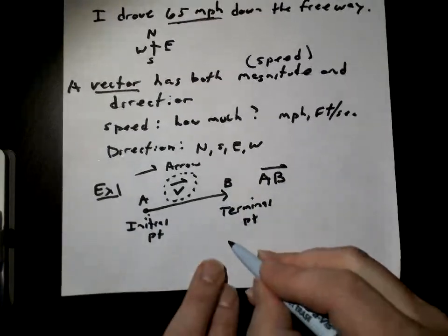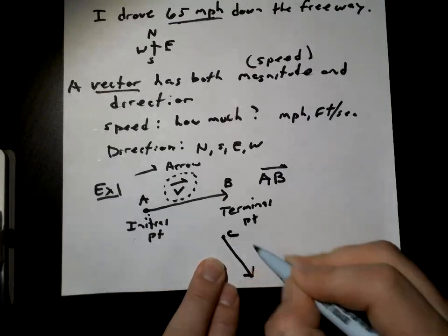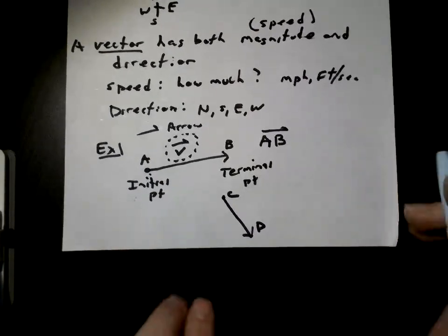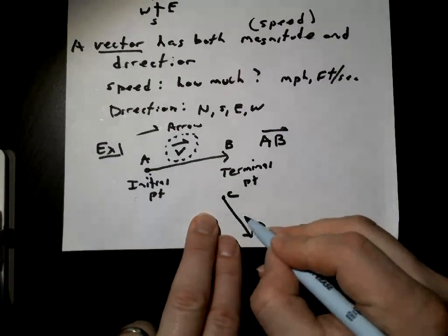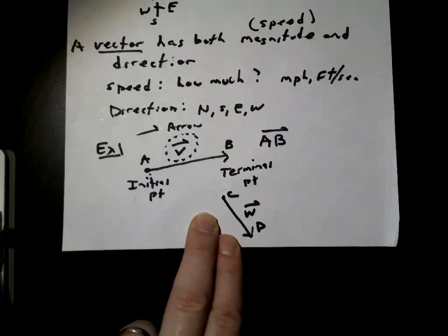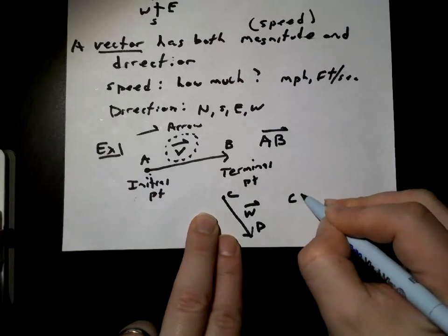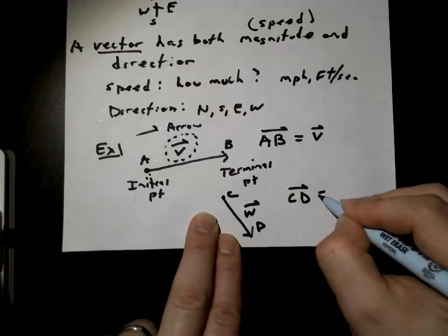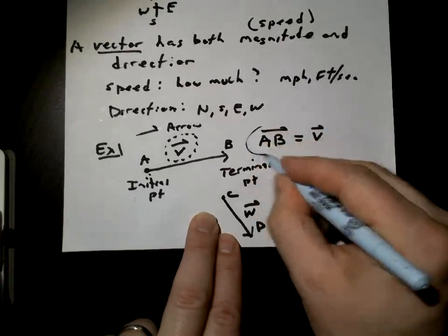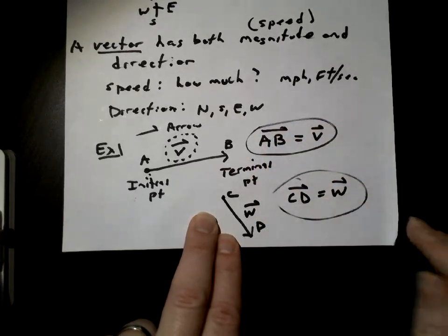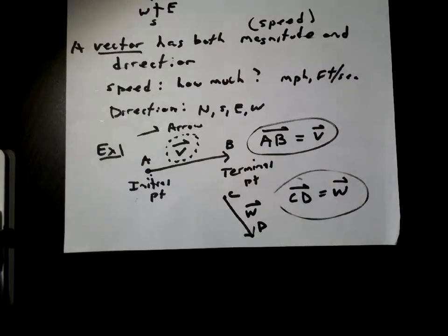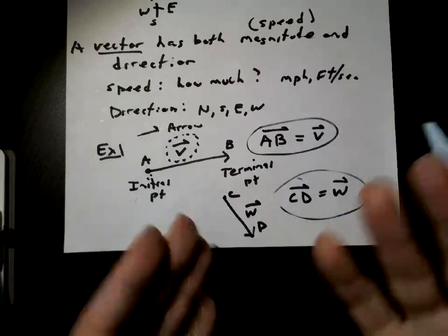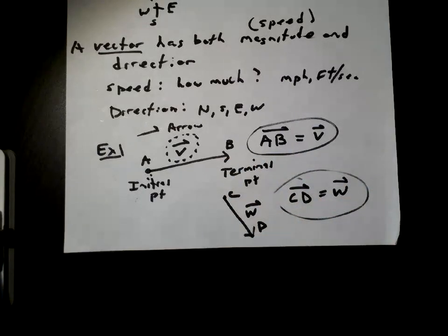What if I said from here to here — let's call this C and D, and call this vector W. So this is going from C to D for that vector. We can name these vectors and represent them. Then we're going to play around with their lengths and do some algebraic activities with these vectors.